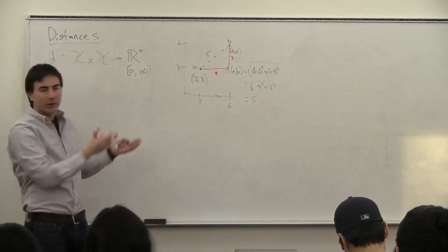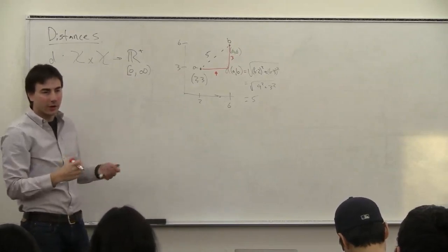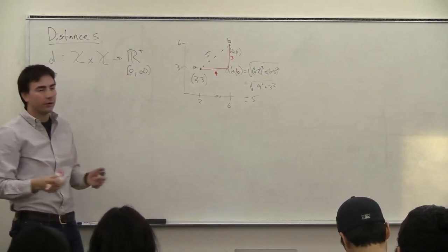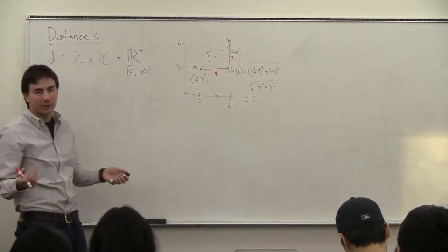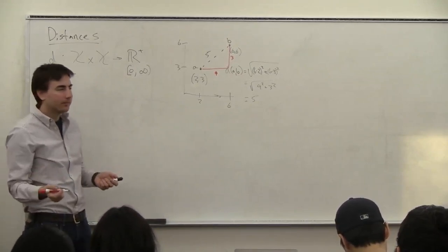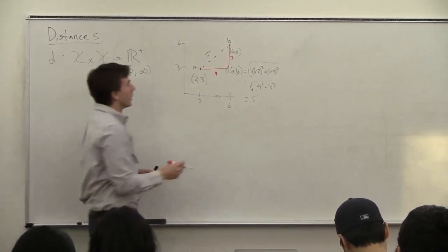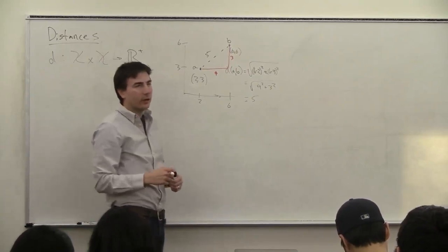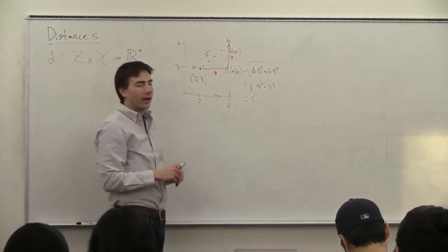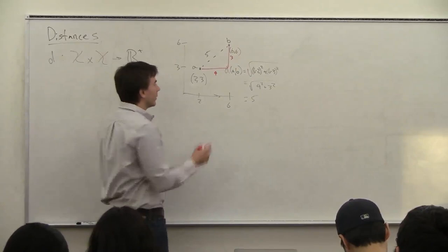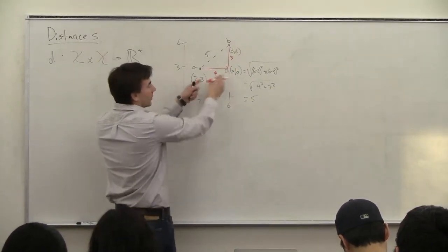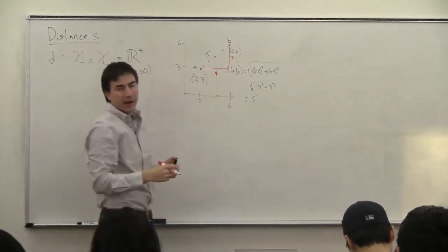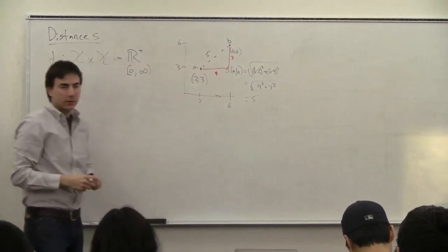But this is not the only way to define distance. If you look at what's called the L-infinity distance, then the distance is 4 — that's the maximum value, the longest radius.